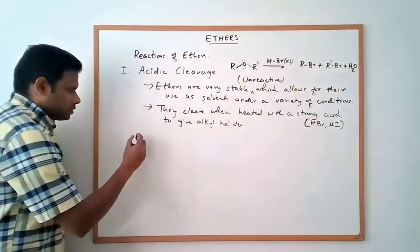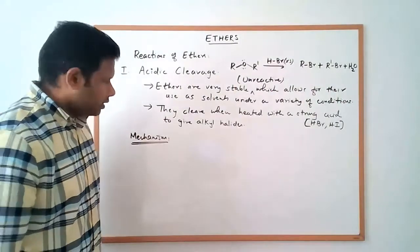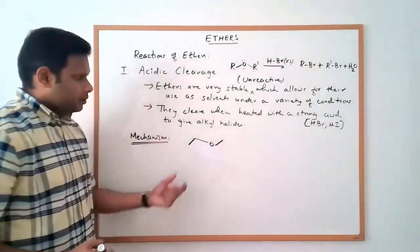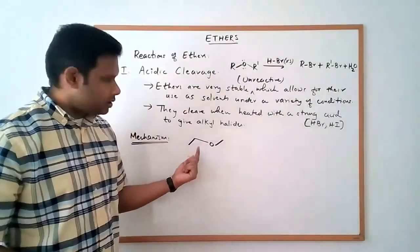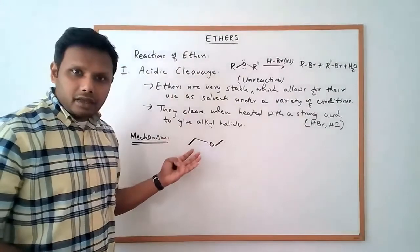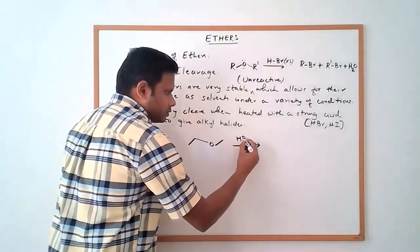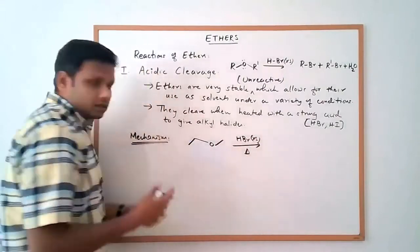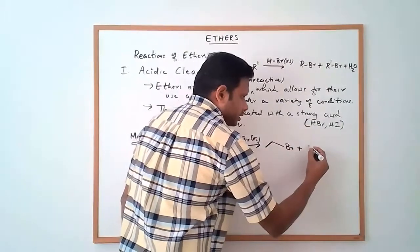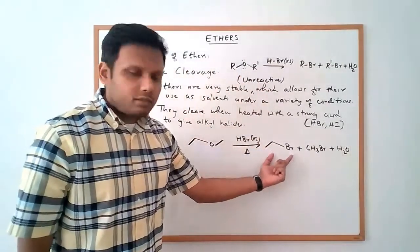Let's look at the mechanism of this reaction and then we'll talk about some other details. We'll use a specific ether to walk through the mechanism — the cleavage of ethyl methyl ether. That's an ethyl group and a methyl group, so it's ethyl methyl ether, also called methoxyethane. If we do an acidic cleavage of this ether using HBr in excess under forcing conditions with heating, we're going to get ethyl bromide plus methyl bromide plus water.